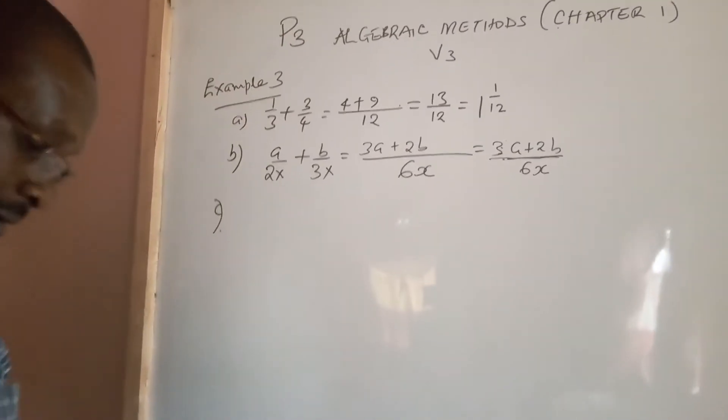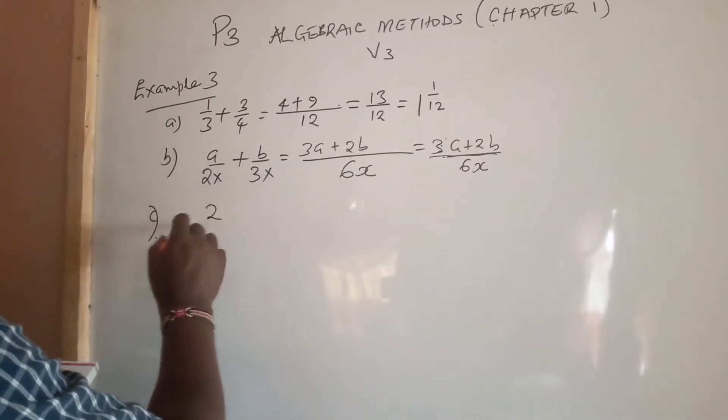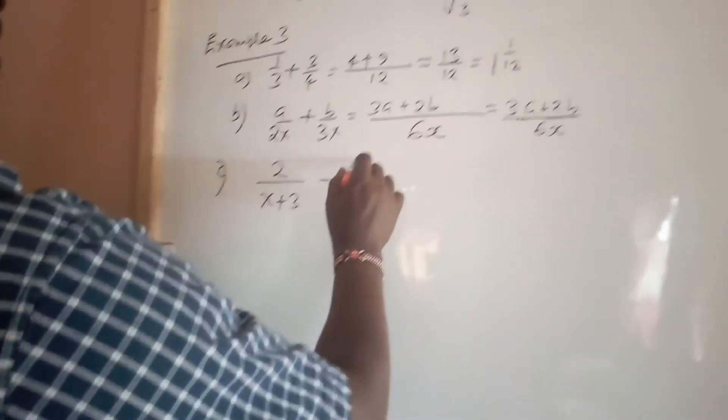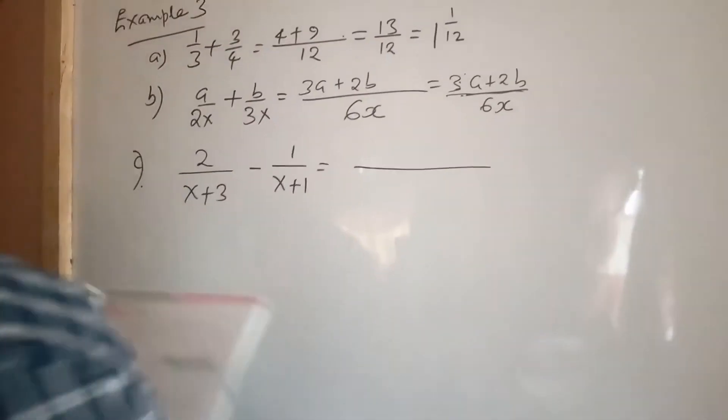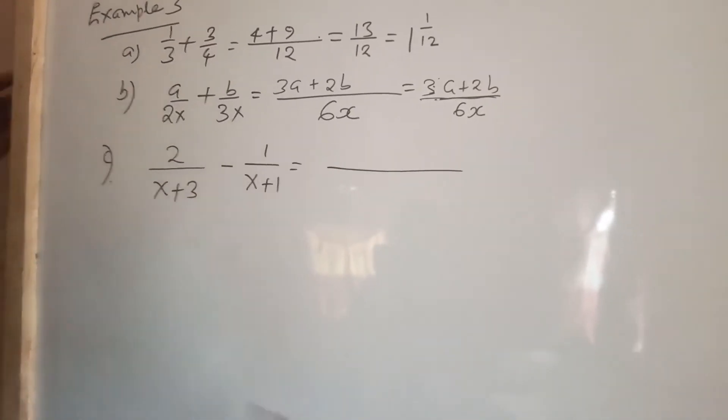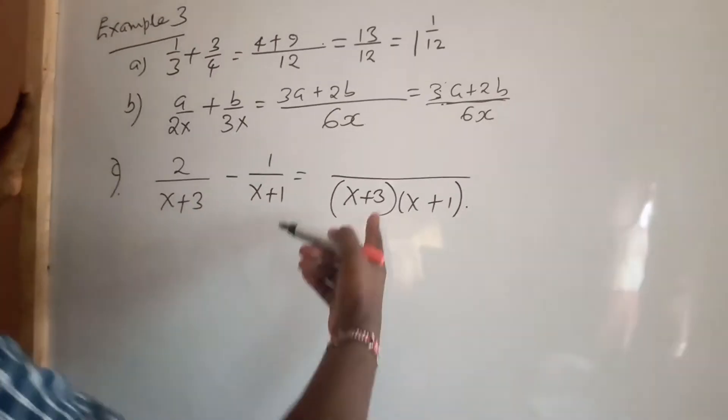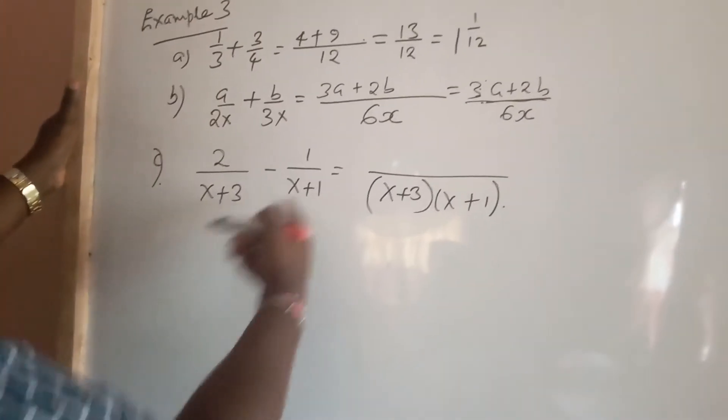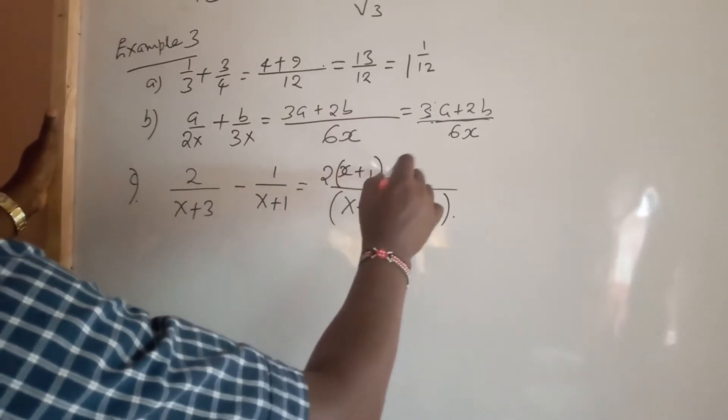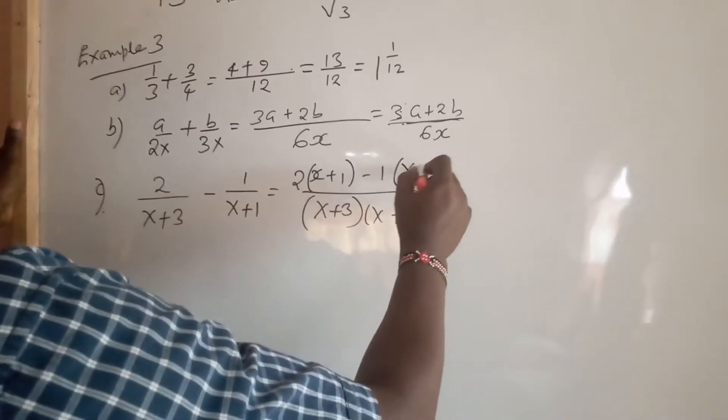Let's look at part C. Part C talks of 2 over (x+3) minus 1 over (x+1). Using the same approach, the LCM of the denominator, because there's nothing common, becomes the product of the denominators: (x+3)(x+1). The denominator divided by the first divisor gives the other divisor. So 2 multiplied by (x+1) minus 1 multiplied by (x+3).